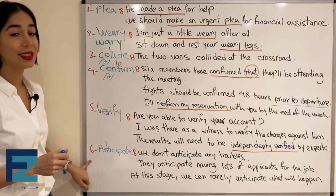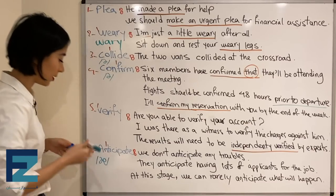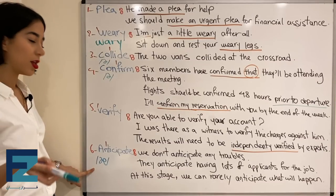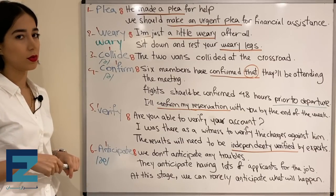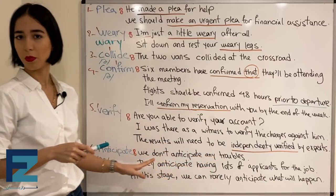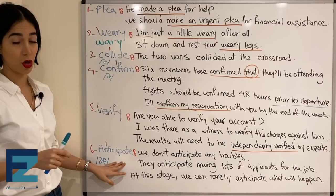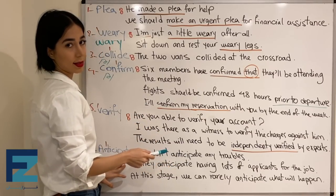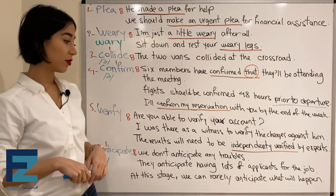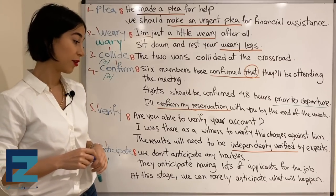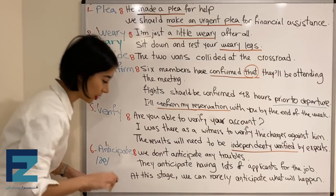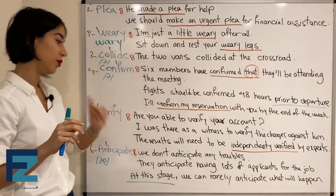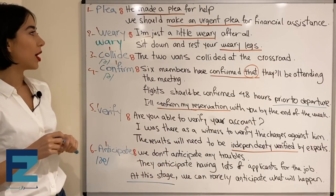Number six: anticipate. Anticipate means to imagine that something will happen, or to expect that something will happen — پیش‌بینی کردن. For example: 'We don't anticipate any troubles.' ما هیچ مشکلی رو پیش‌بینی نمی‌کنیم. 'They anticipate having lots of applicants for the job.' Applicants یعنی متقاضی. 'At this stage we can rarely anticipate what will happen.' یعنی ما الان در این لحظه به ندرت می‌تونیم پیش‌بینی کنیم که چه اتفاقی می‌افته.